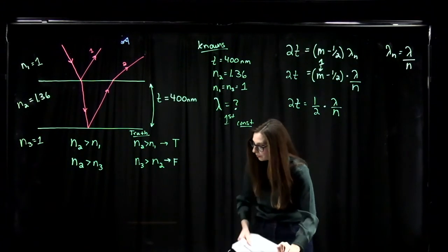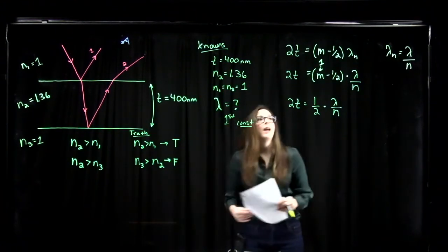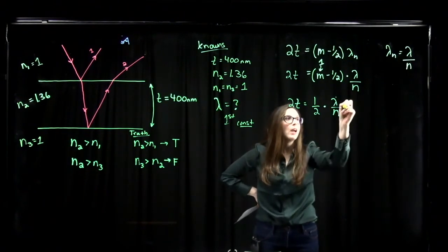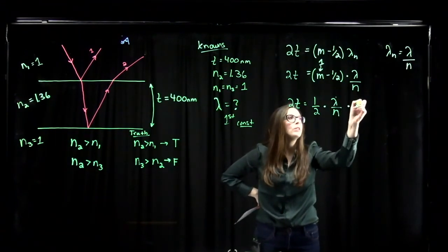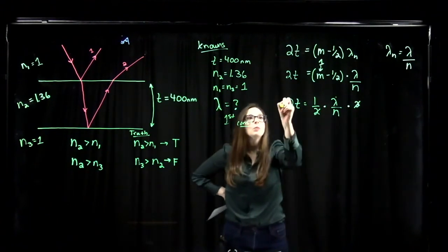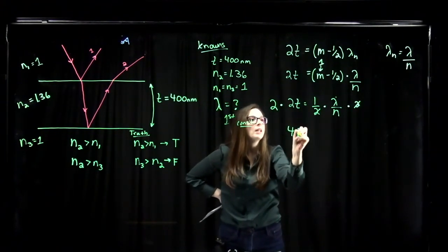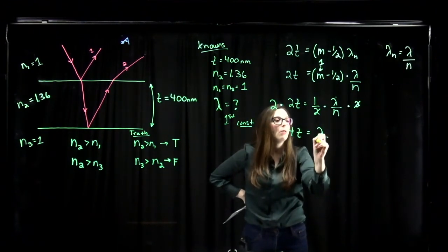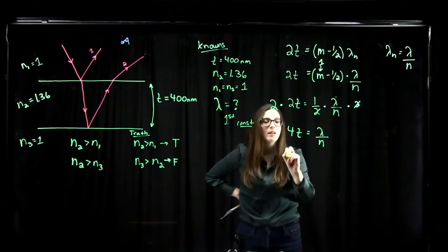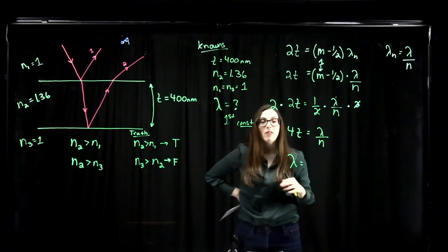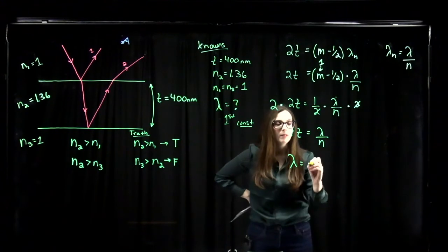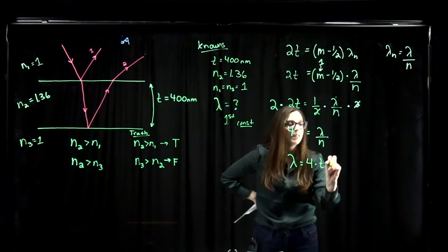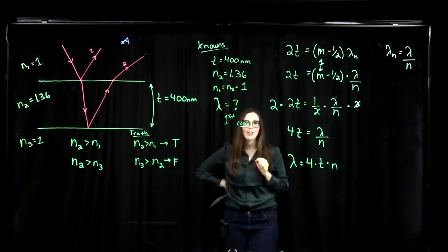To solve for lambda, we multiply both sides by 2, giving us 4T equals lambda over N. Then solving for lambda: the wavelength of light incident on the film equals 4 times the thickness of the film times the index of refraction of the film.